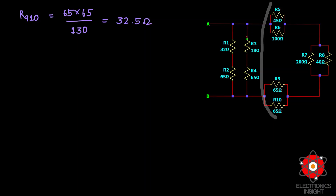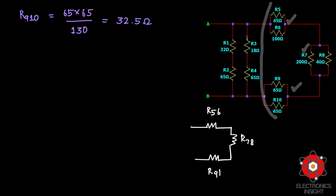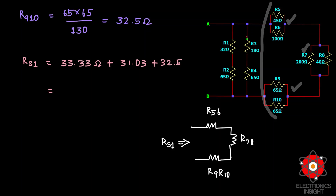Now that the three parallel combinations are solved, the circuit reduces to three resistors in series — R5-R6 equivalent, R7-R8 equivalent, and R9-R10 equivalent. Taking the sum gives us the series equivalent resistance RS1 = 33.33 + 31.03 + 32.5 = 96.86 ohms.